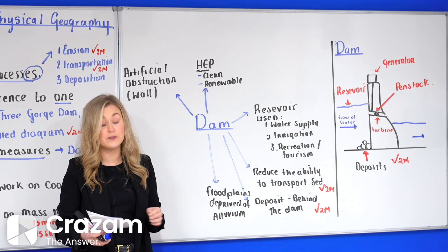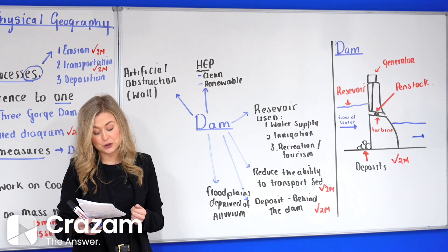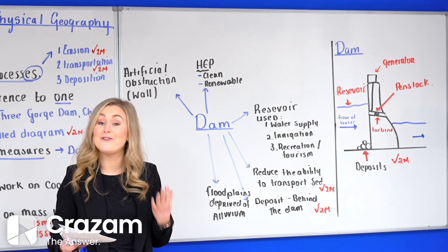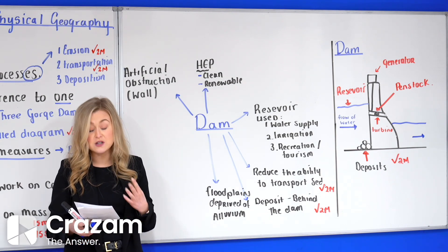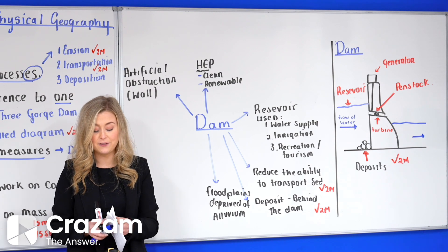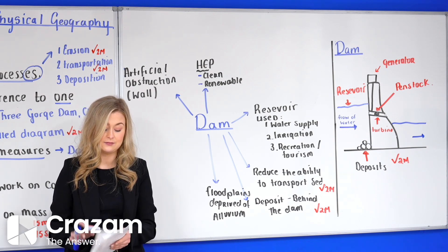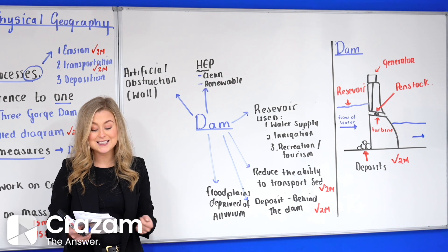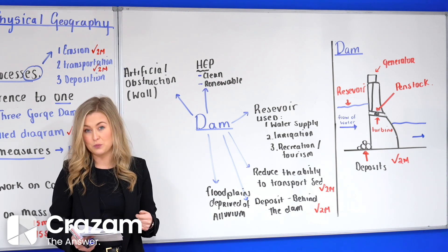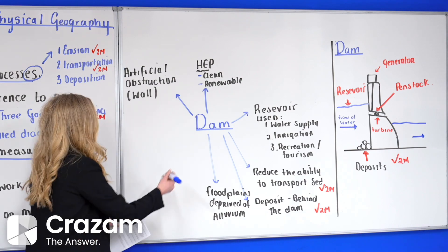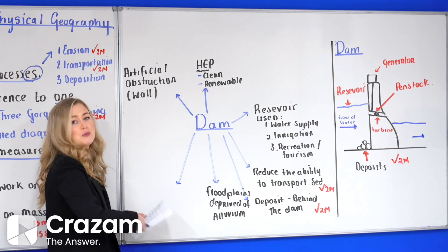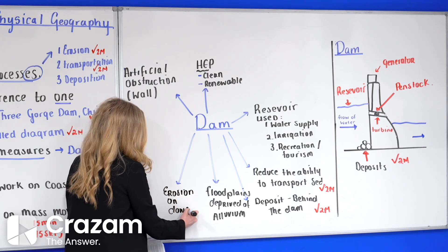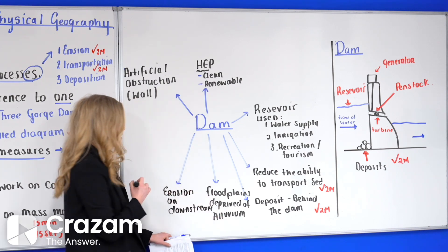We said the suspended load of fine particles sometimes is the only parts that get through. Usually downstream areas have a lower velocity, so vertical erosion and lateral erosion generally doesn't occur. Water that is released through the dam will flow in a faster velocity. This is due to not carrying much load and therefore will have higher energy. This causes erosion of the channel in a section of the river that previously did not get much erosion. So we're going to mention erosion begins again on the downstream side of the river.